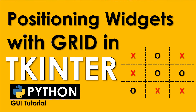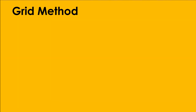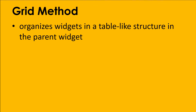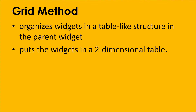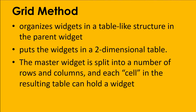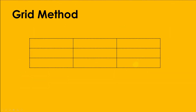Welcome to ITS - Information Technology Skills. Today's video is about positioning widgets with grid in tkinter. The grid method is used to organize widgets in a table-like structure in a parent widget. It puts the widget on a two-dimensional table - the master widget is split into a number of rows and columns, each called a cell.